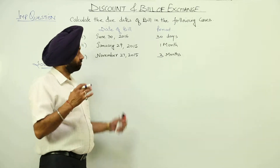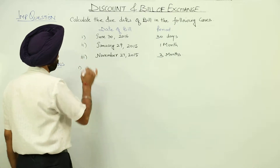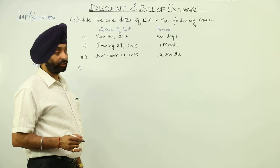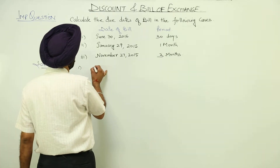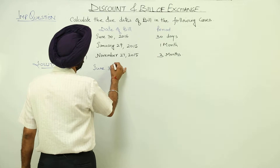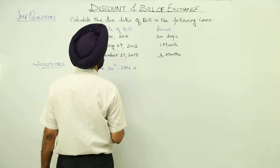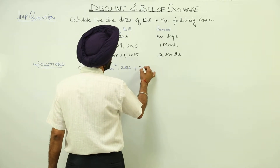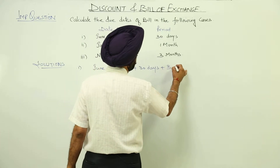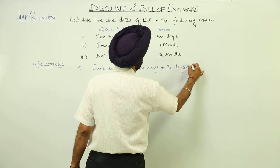Now how to calculate due dates? Let me explain it. Number 1: we are having June 30th, 2016, plus 30 days, plus 3 days of grace.